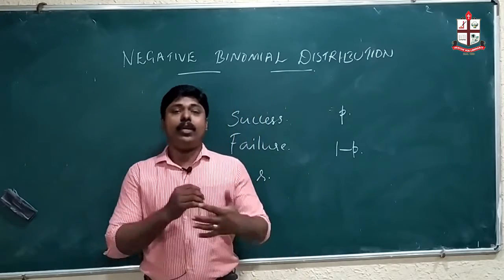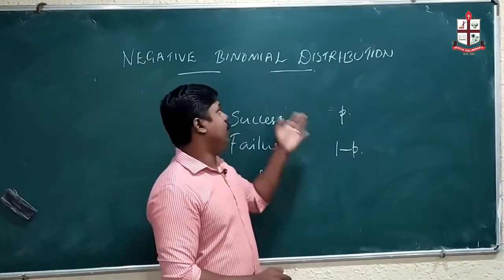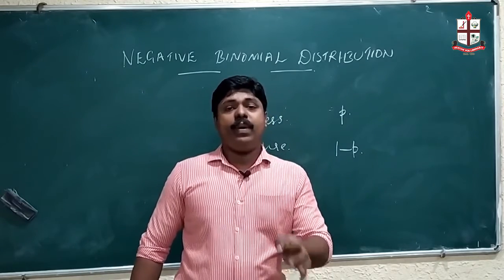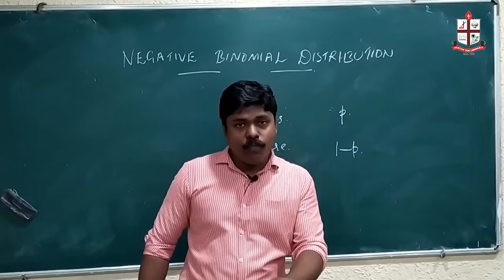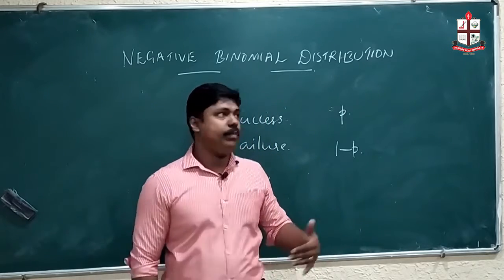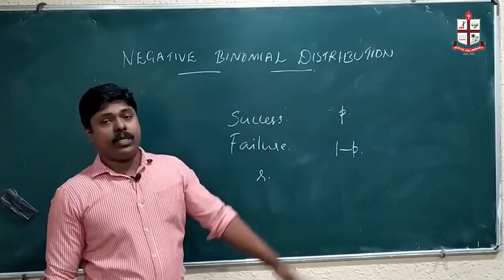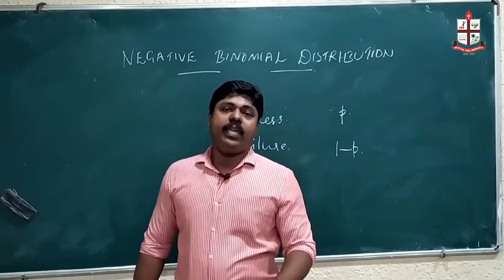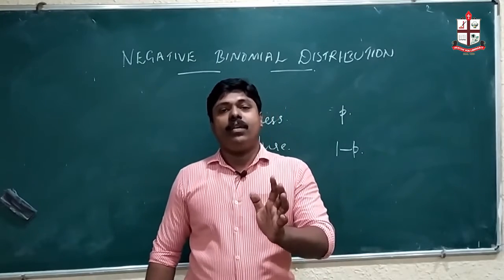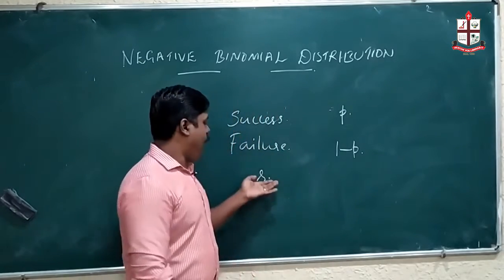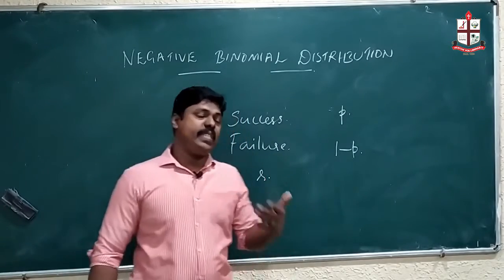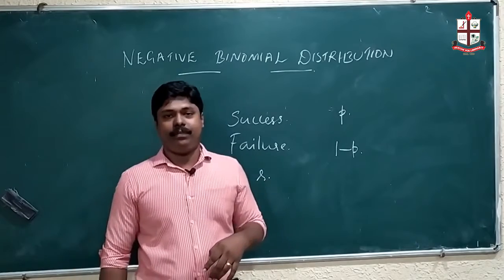In binomial distribution, a binomial random variable is defined as the number of successes in n trials. In negative binomial distribution, the variable is defined as the number of failures before getting r successes — that is, the number of failures preceding a success, denoted k.